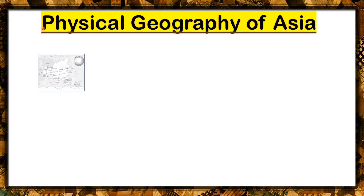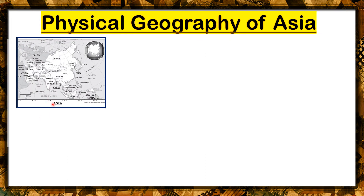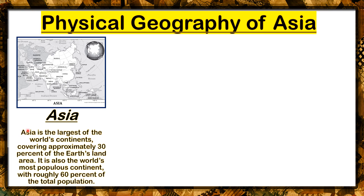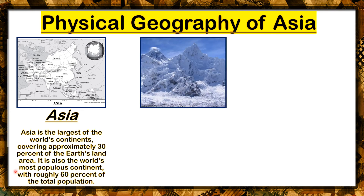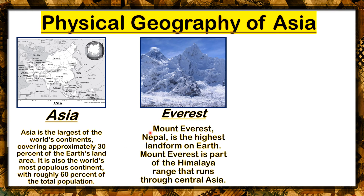Now class, let us discuss about the physical geography of Asia. Asia is the largest of the world's continents, covering approximately 30% of the Earth's land. It is also the world's most populous continent, with roughly 60% of the total population. Mount Everest in Nepal is the highest landform on Earth, and it is part of the Himalaya Range that runs through Central Asia.